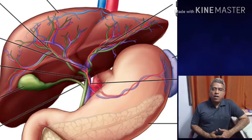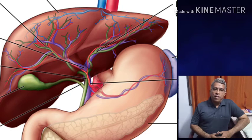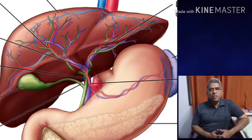Prothrombin and fibrinogen are coagulatory factors synthesized by the liver. Heparin is also synthesized by the liver. Heparin is an anticoagulant that prevents the coagulation of blood inside the blood vessels.